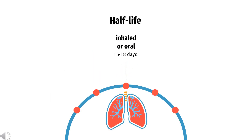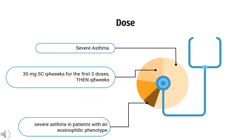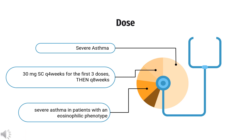The half-life of benrolizumab is estimated to be 15 to 18 days. For severe asthma as add-on maintenance treatment in patients with an eosinophilic phenotype, the dose is 30 mg subcutaneously every 4 weeks for the first 3 doses, then every 8 weeks thereafter.